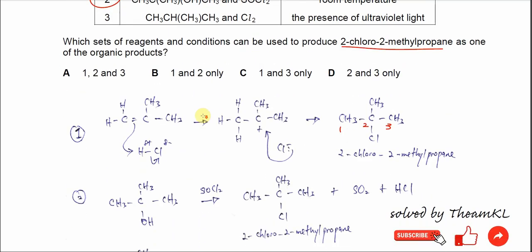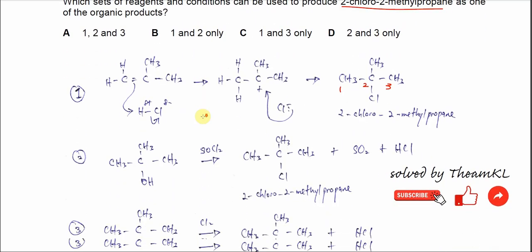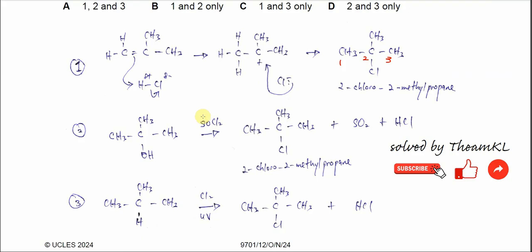The last one is the branched molecule. We have 2-methylpropane. The hydrogen bonded to the second carbon can be substituted by chlorine under sunlight or UV.